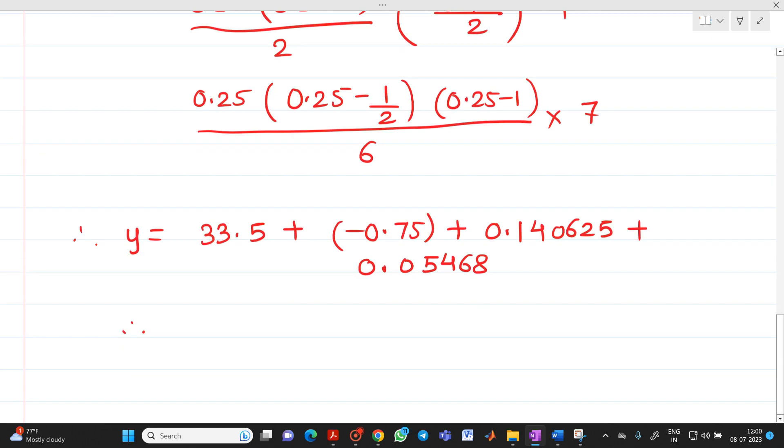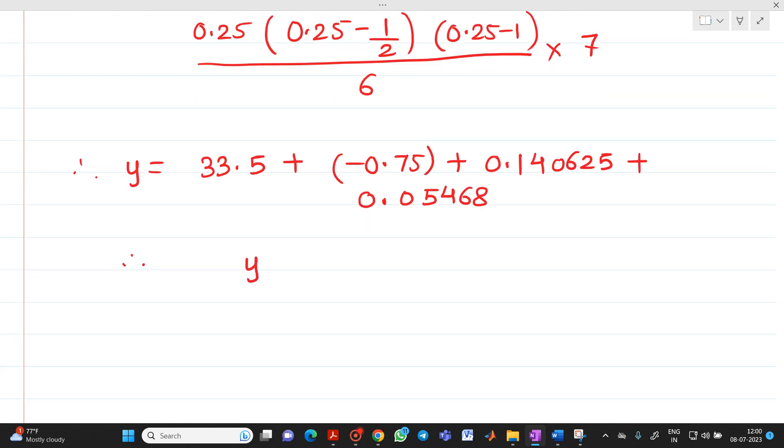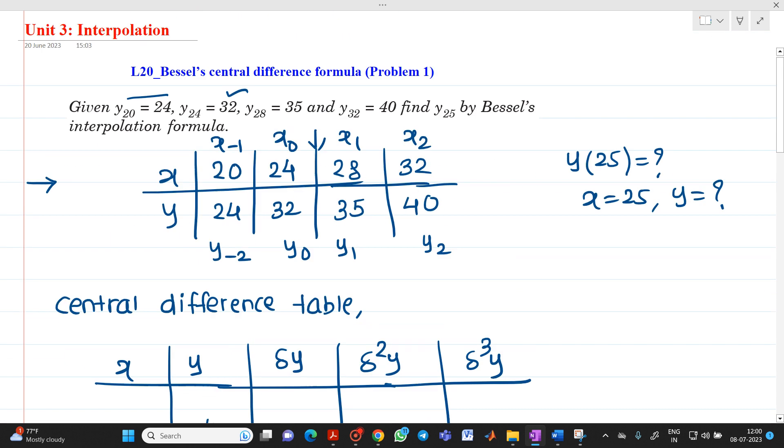So therefore, we will get answer y = 32.94. Or in other words, we can say that y(25) will be equal to 32.94. So this is the first problem of Bessel's central difference formula. If you have any doubt, please feel free to ask any questions. Thank you.